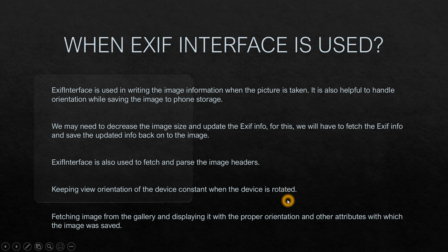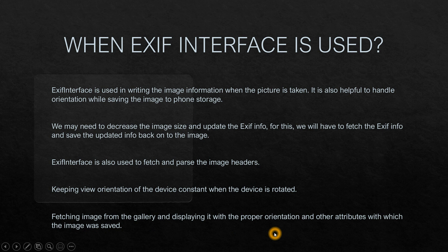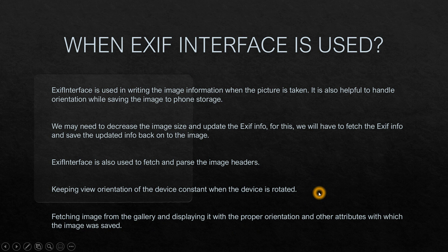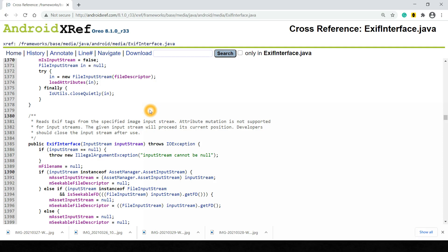When you rotate your device, your image should not rotate — it should remain constant. In those cases we use ExifInterface. We also use ExifInterface to fetch an image from the gallery and display it with the proper orientation and other attributes with which the image was saved. For example, if you click an image in portrait mode and later open it from the gallery, it should still display in portrait mode.